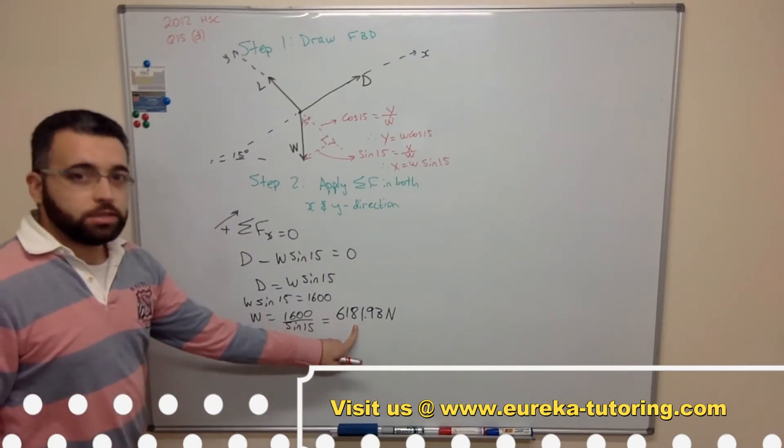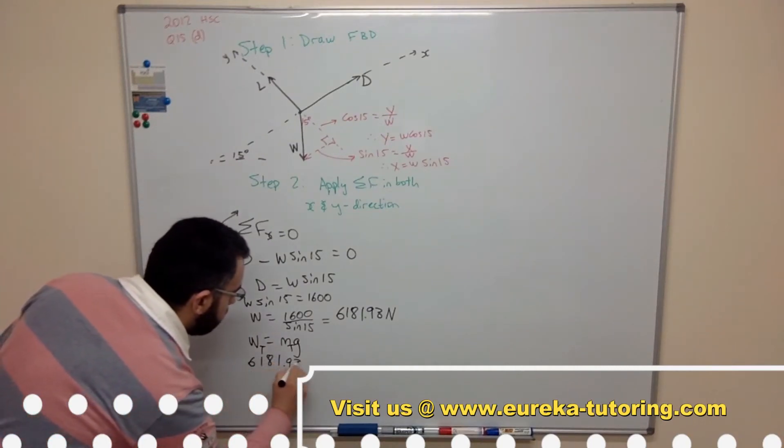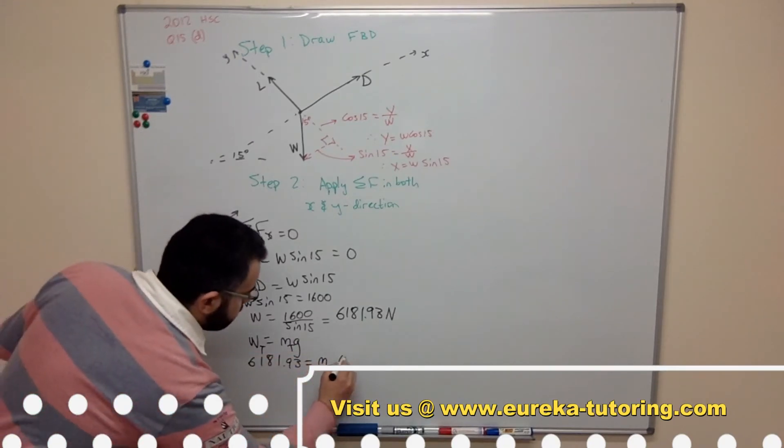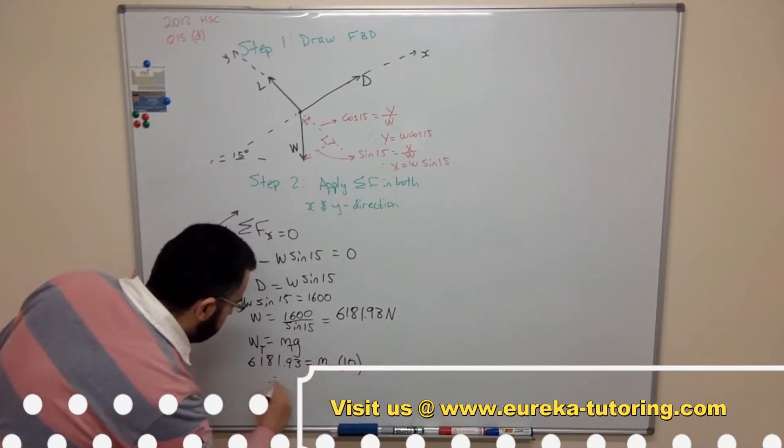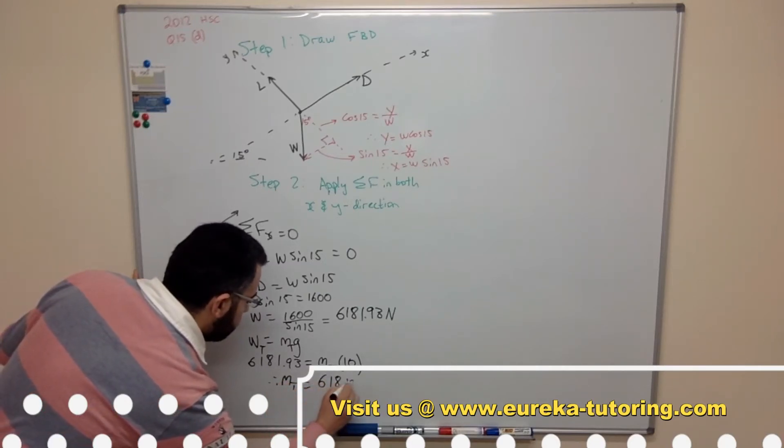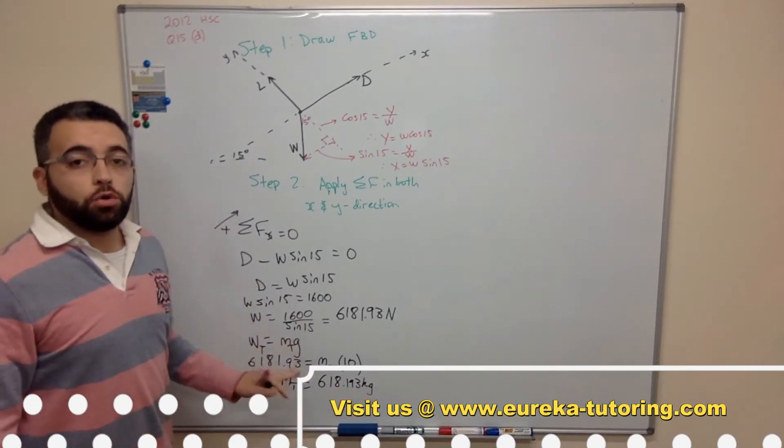In our case this is the total mass. I know what the total weight is which is this. So 6181.93 equals mass total. I'm going to take g as 10 times 10. Therefore mass total equals 618.193 kilograms.